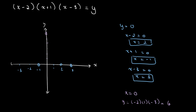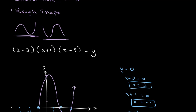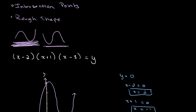Now that we have the intercepts, all we need to do is connect the dots and find out which shape our graph follows. Looking at the way our dots align, the graph goes from negative 1 all the way up to 6, then back down to 2, then back up to 3. So our graph follows the first shape. That gives us the intersection points and the rough shape of our graph.